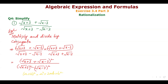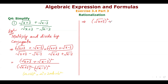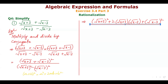So the numerator expands: a squared is x plus 3, and b squared is under root x minus 3 whole square, giving x minus 3. In the denominator, the square roots cancel, giving x plus 3 minus x minus 3.